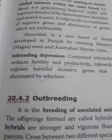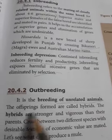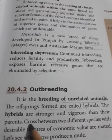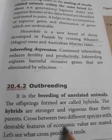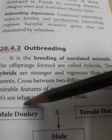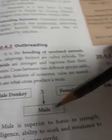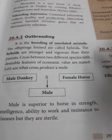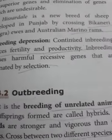Outbreeding is the breeding of unrelated animals — when the cross is made between different breeds. The offspring formed are called hybrids, and the hybrids are stronger and more vigorous than their parents. For example, crossing a male donkey and a female horse produces a mule. The mule is superior to the horse in strength, intelligence, ability to work, and resistance to disease, but the mule is sterile.